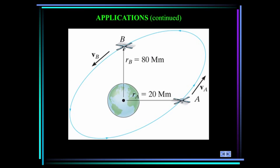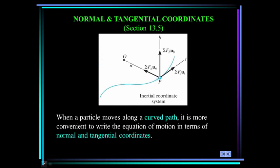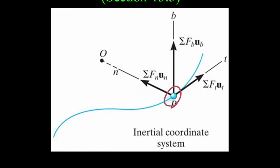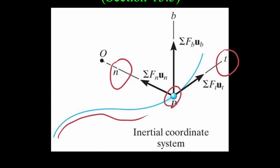All of these problems can be solved using Newton's equation of motion and using normal and tangential coordinates. When a particle P moves along a curved path, it is more convenient to think of the motion in terms of normal and tangential coordinates. This is very similar to chapter 12 when we studied kinematics using normal and tangential coordinates.